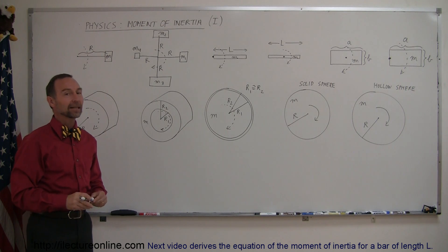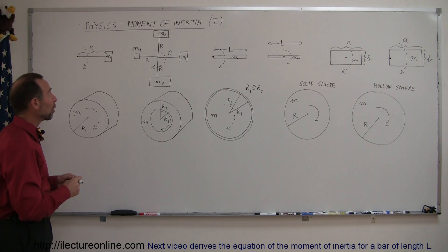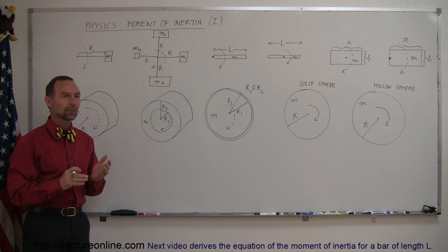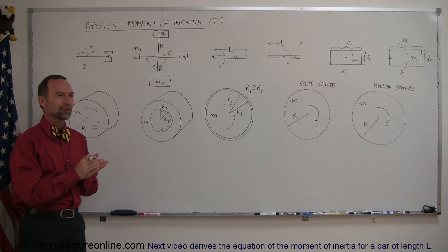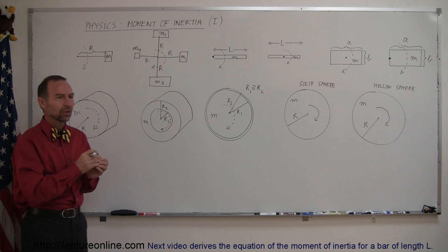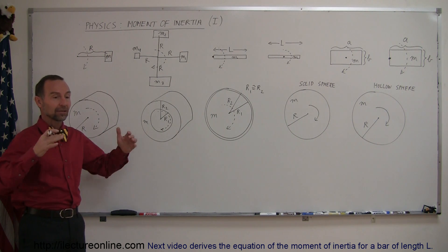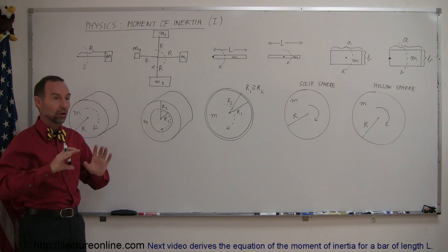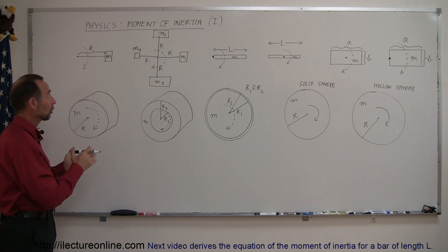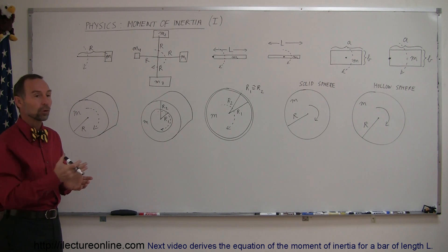Welcome to I Lecture Online, continuing with our concept of moment of inertia. Moment of inertia is the property that an object has that makes it difficult to rotate. Just like an object that is large in mass is hard to move, an object that has a large moment of inertia is hard to rotate.